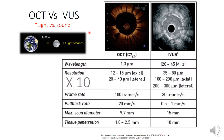When comparing OCT versus IVUS, we are simply comparing light versus sound. As we all know, light has a very high velocity — it can travel from earth to moon in about 1.3 seconds. Light has a very short wavelength, which translates into high resolution: about 10 times the resolution of IVUS. But this comes at the expense of tissue penetration, which is lower for OCT compared to IVUS.